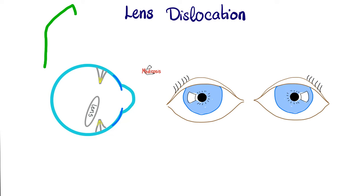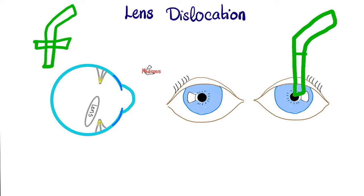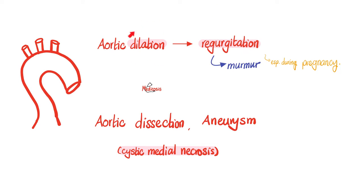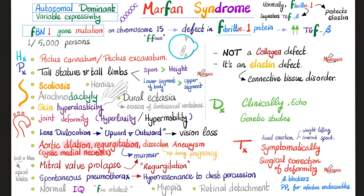In Marfan syndrome, the lens dislocation is upwards and outwards — superiorly and temporally. Conversely, in homocystinuria, it's downward and inwards — inferiorly and nasally. Marfan syndrome also has aortic root dilatation causing aortic insufficiency or regurgitation, with a famous diastolic decrescendo murmur, as well as aortic dissection and aortic aneurysm due to cystic medial necrosis.